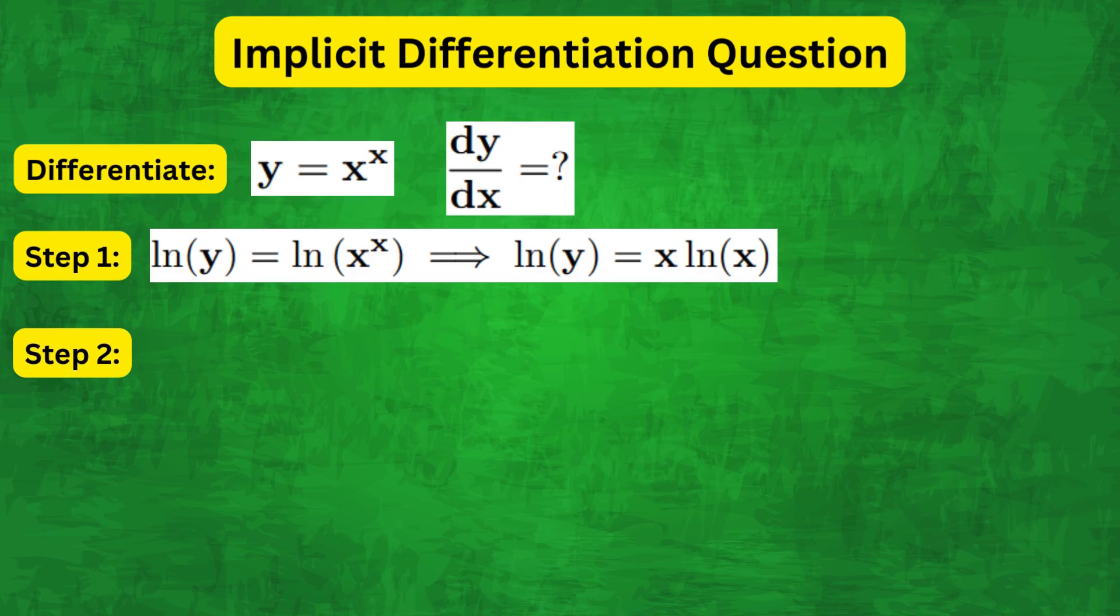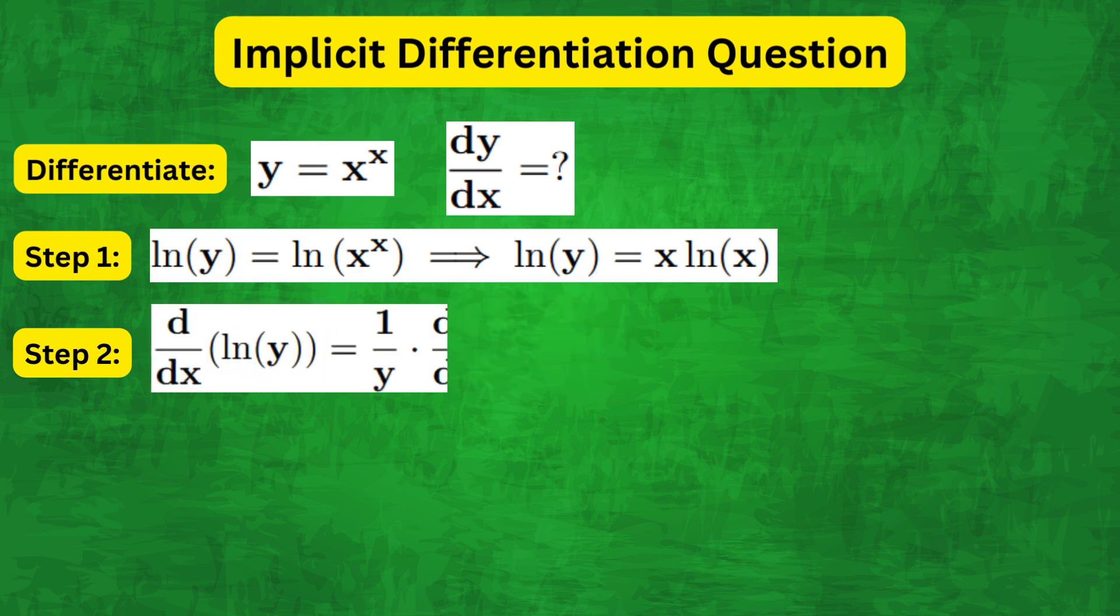Now we can differentiate both sides implicitly with respect to x. For the left hand side, recognize that y is a function of x. So d by dx of natural log of y equals one over y times dy by dx.